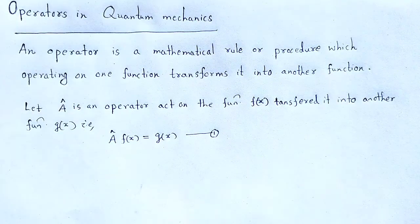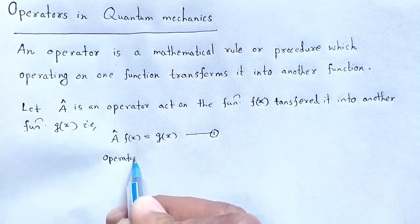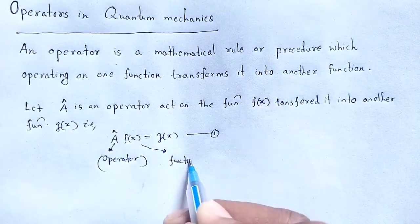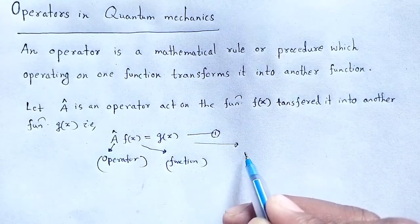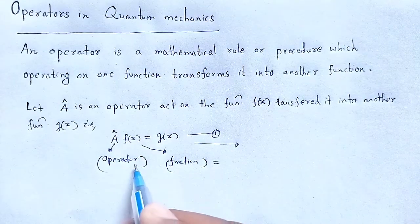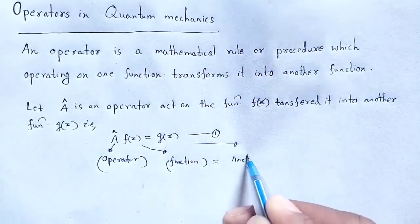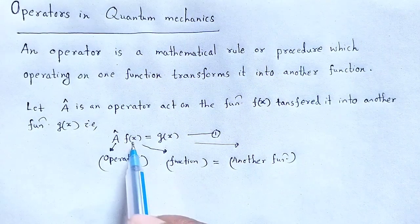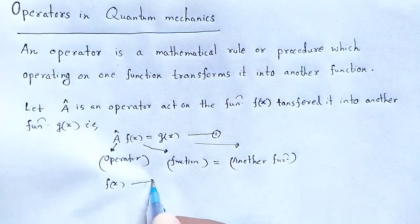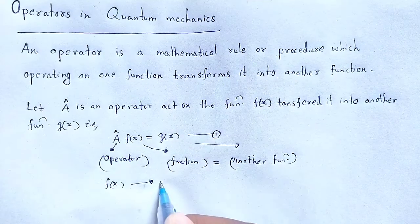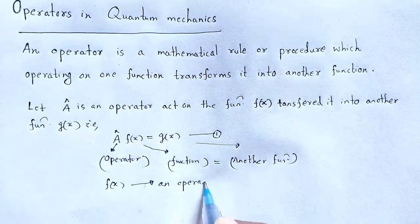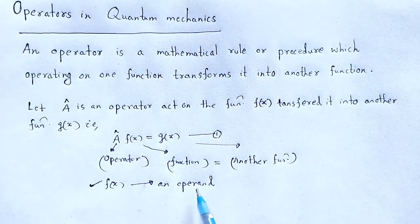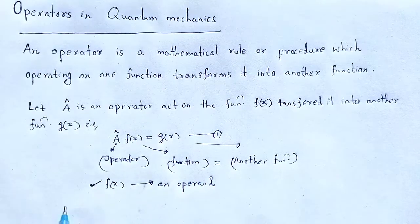This is the method to represent: here is the operator, and that operates on the function, which leads to what the operator acts over — a function gives rise to another function. Here, f of x is called an operand. That means an operator acts upon the function f of x, and that function is known as an operand.